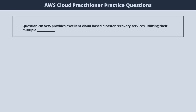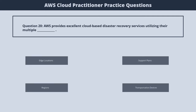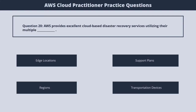Question 20. AWS provides excellent cloud-based disaster recovery services, utilizing their multiple: 1. Edge locations. 2. Support plans. 3. Regions. 4. Transportation devices. The correct answer is 3. Regions.